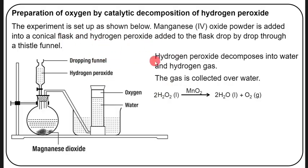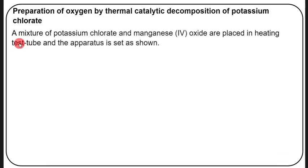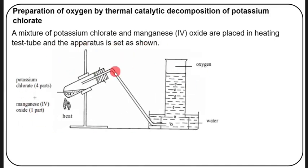Now let's look at the preparation of oxygen by thermal catalytic decomposition of potassium chlorate. Here we use potassium chlorate — thermocatalytic means you need both a catalyst and heat. A mixture of potassium chlorate and manganese(IV) oxide are placed in a heating test tube and the apparatus is set up. After heating, the mixture decomposes to form oxygen gas.